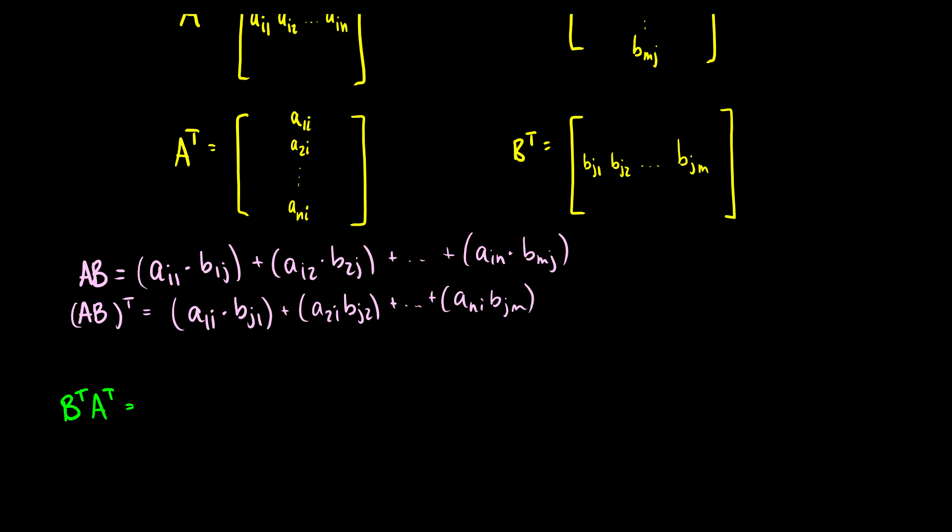Well, this is just the first entry in B^T times the first entry in A^T, adding the second entry times the second entry, so on and so forth.